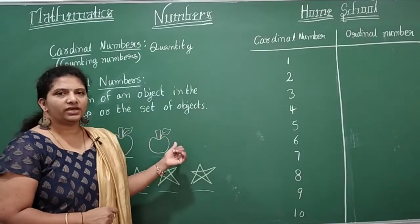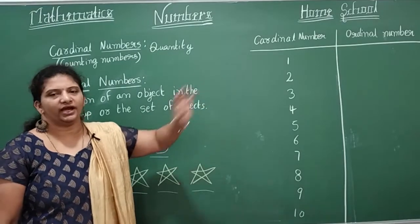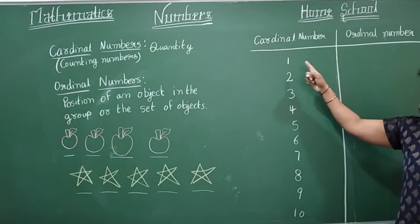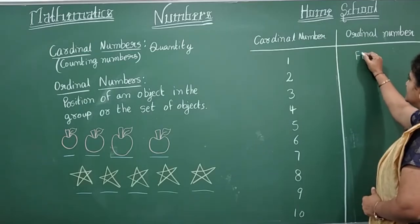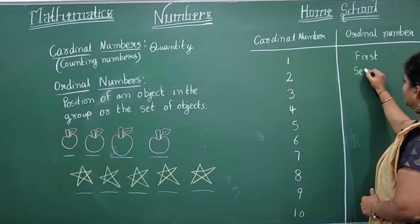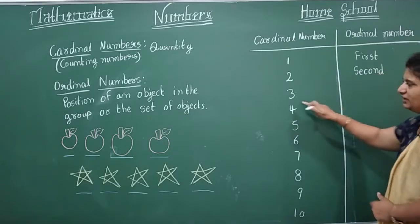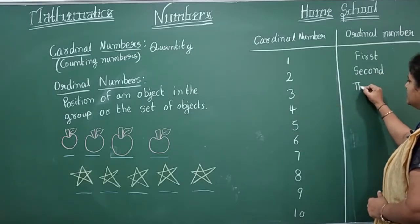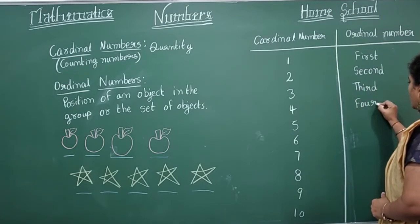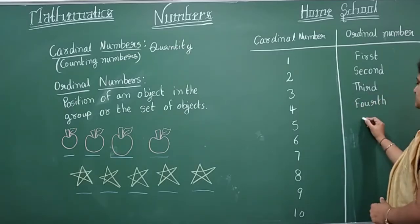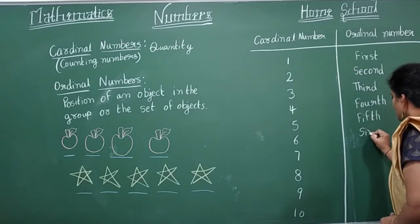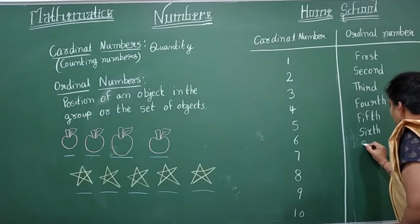Let's write the ordinal numbers. How do you write position one in ordinal? We write it as 'first.' Position two is 'second.' Position three is 'third.' Position four is 'fourth.' Position five is 'fifth.' And position six is 'sixth.'